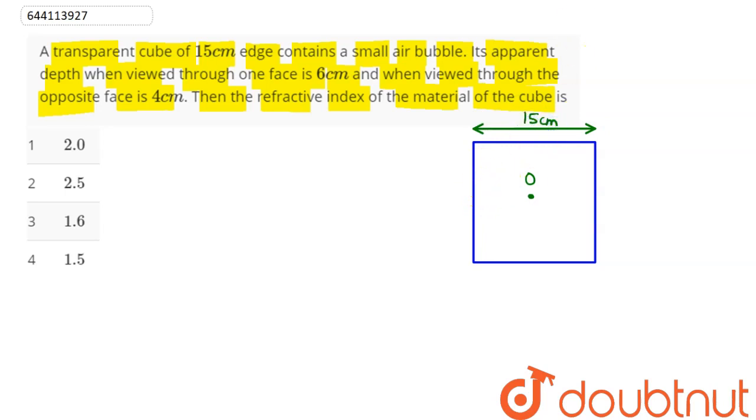Hence we can say here, if this distance is our x, then this distance will be our 15 minus x. So we here consider this distance as x.